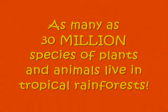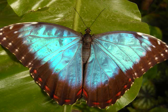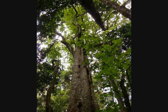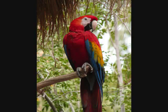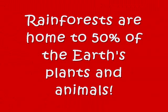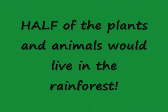As many as 30 million species of plants and animals live in tropical rainforests. Maybe some of these plants or animals come to mind from what we learned last time. Rainforests are home to 50% of the Earth's plants and animals. This means that if all the plants and animals in the world were grouped together, half of them would live in the rainforest. Insane, isn't it?